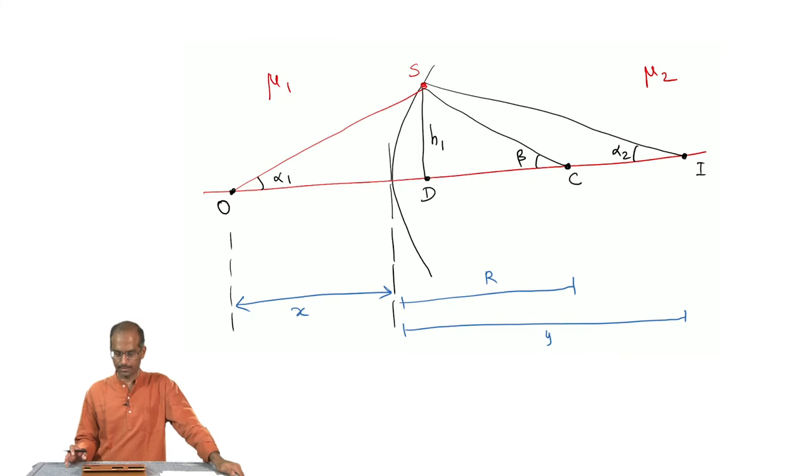I have redrawn the figure slightly differently so that you can obtain the same result using Snell's law of refraction. There is a beam that goes from point O to S and gets refracted and possibly converges at point i. There are various angles defined: alpha 1, alpha 2, beta, and there is also this perpendicular which is of height h1. What is of interest for us are these three distances: x, which is the distance from point P to O, and the distance from P to I which is called y, and then there is radius of curvature which is PC in this diagram.